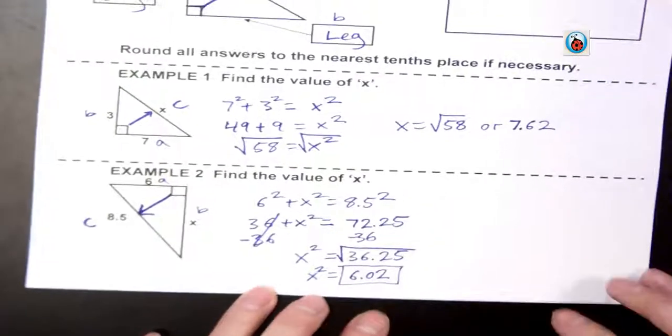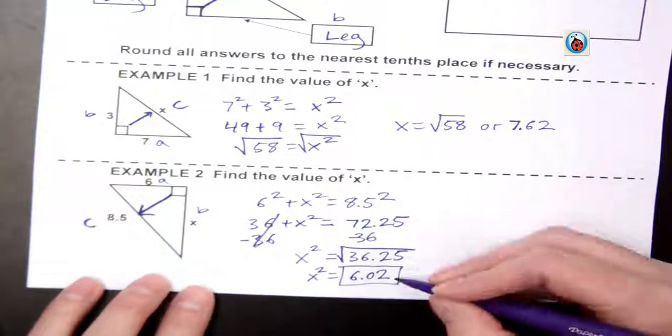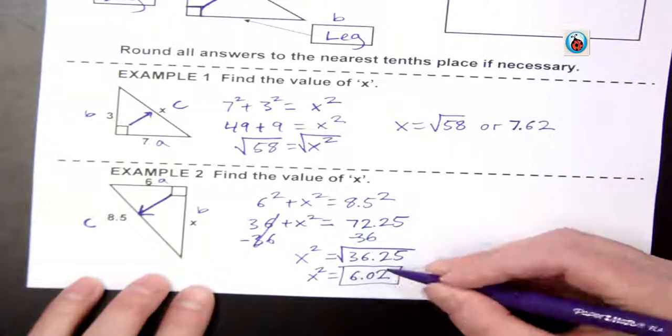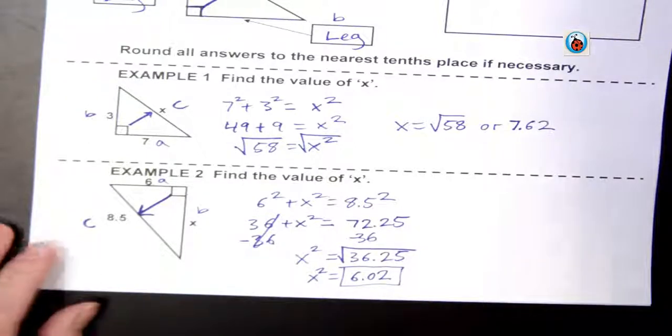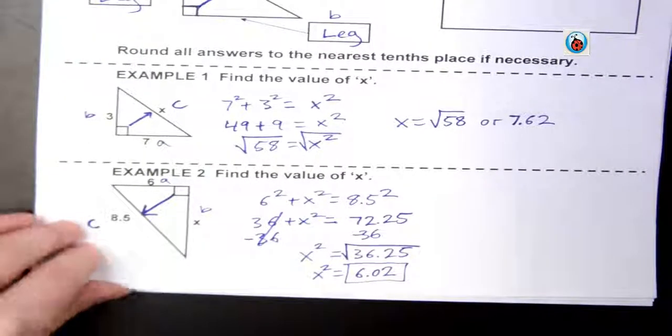Now, if I had rounded differently at this point, I might have ended up with a slightly different number, but it's going to come out to the same thing within one or two decimal places. So now go ahead and flip to your next page.